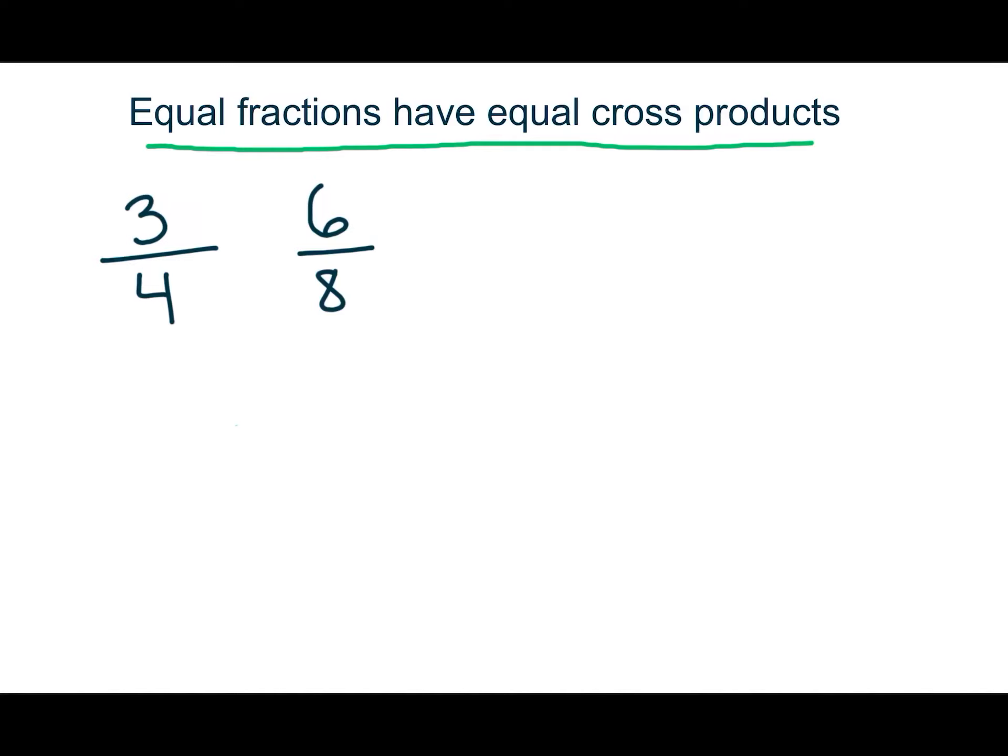So what that means is if we multiply these two numbers and we multiply these two numbers, their products will be the same. So 3 times 8 will be equal to 4 times 6 if these two are equivalent fractions. And 3 times 8 is 24 and 4 times 6 is 24.